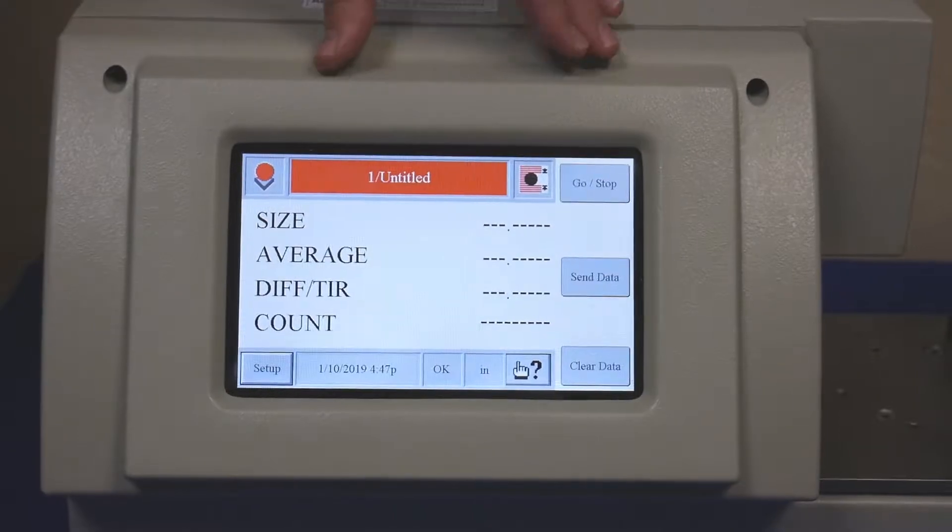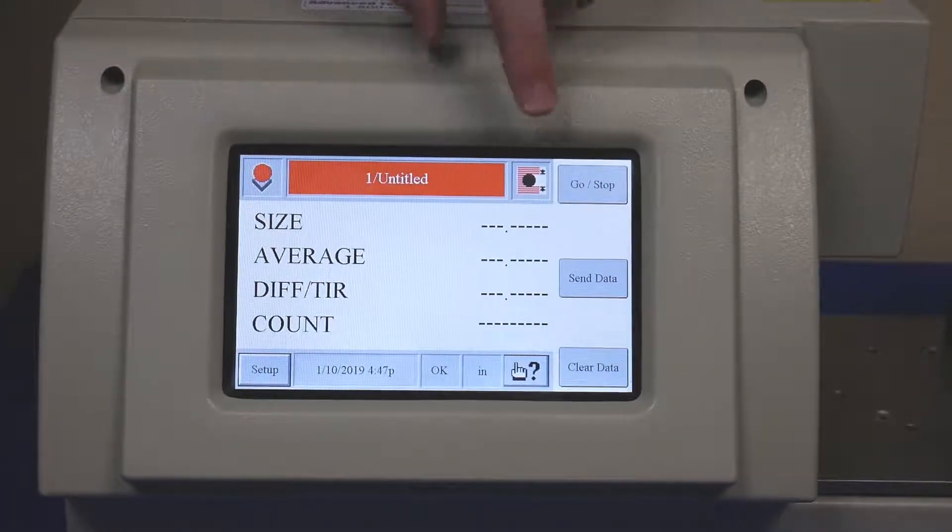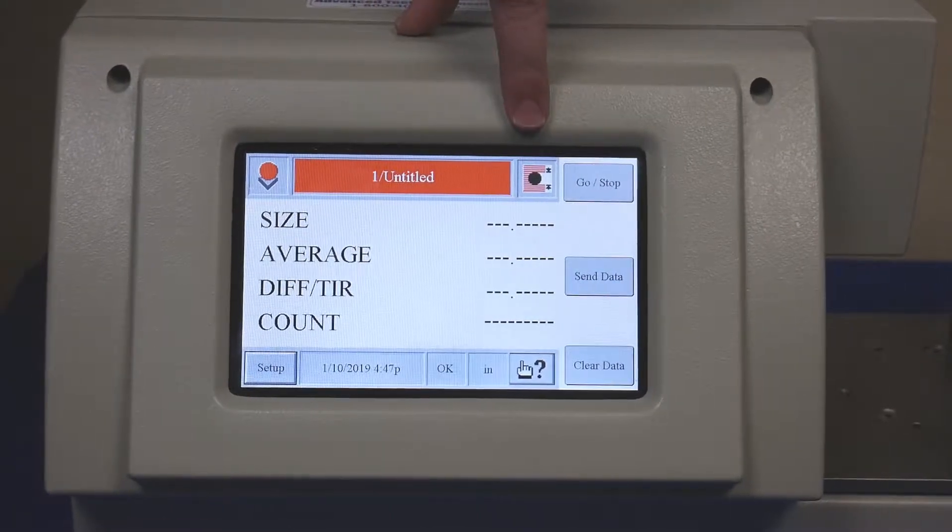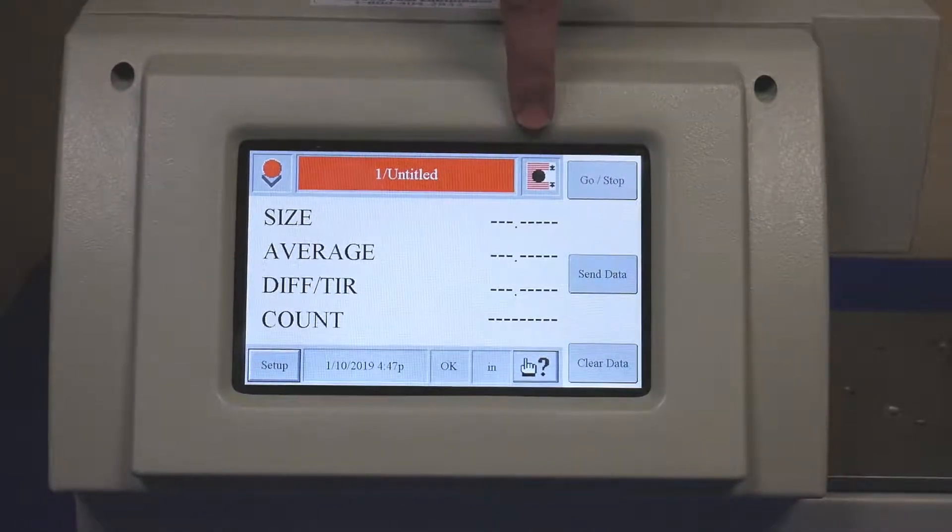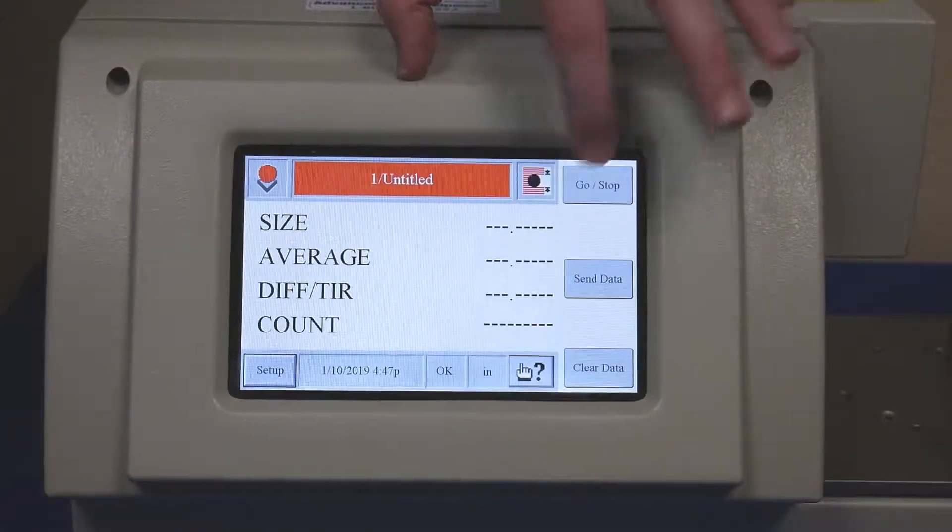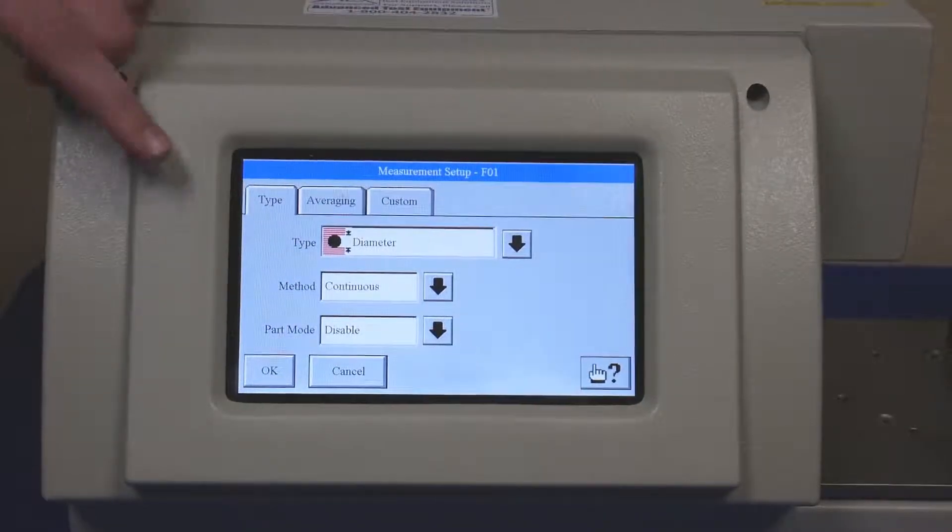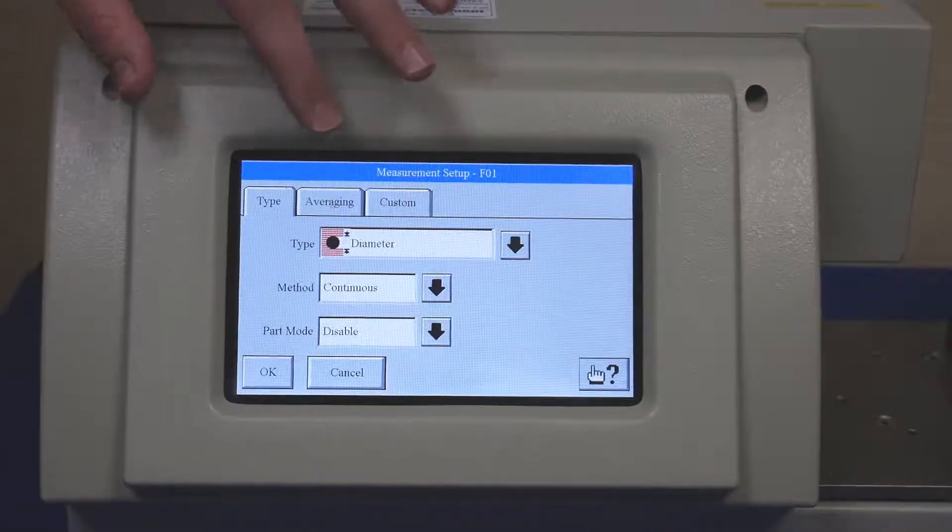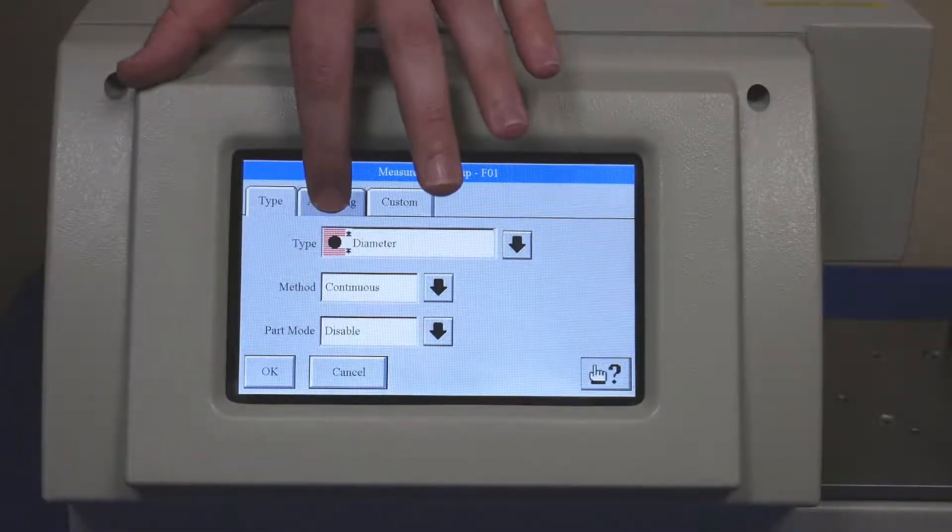Okay, so in order to conduct this test, what we're going to do is go to the measuring button. The measuring button is at the top right section. You can see it is a symbol of a cylinder surrounded by the lasers going across it. So I click on that, then you're going to see a menu here with type, averaging, and custom. What you want is averaging.